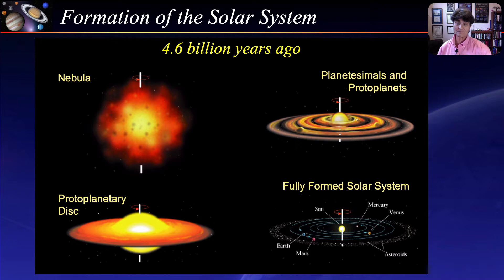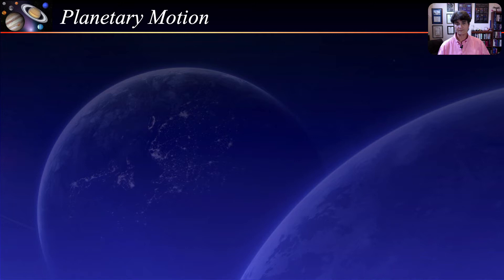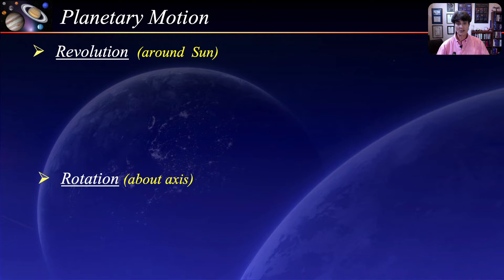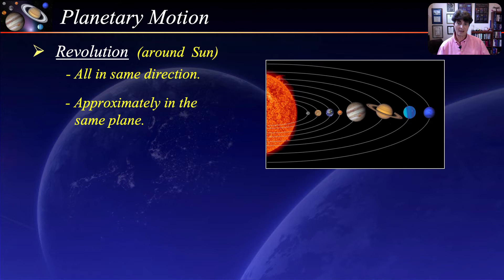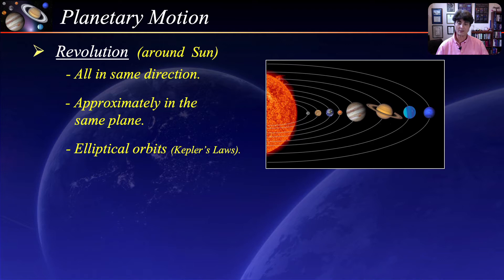Planets have motions associated with their formation. The two main motions are revolution around the sun and rotation about their axis. Planets were formed by the same rotating cloud of gas and dust as the sun, so they all revolve around the sun in the same direction. Since they were formed by the same rotating nebula and protoplanetary disk, their orbits are all in approximately the same plane. Their orbits are elliptical, not circular, and they follow Kepler's laws of planetary motion.